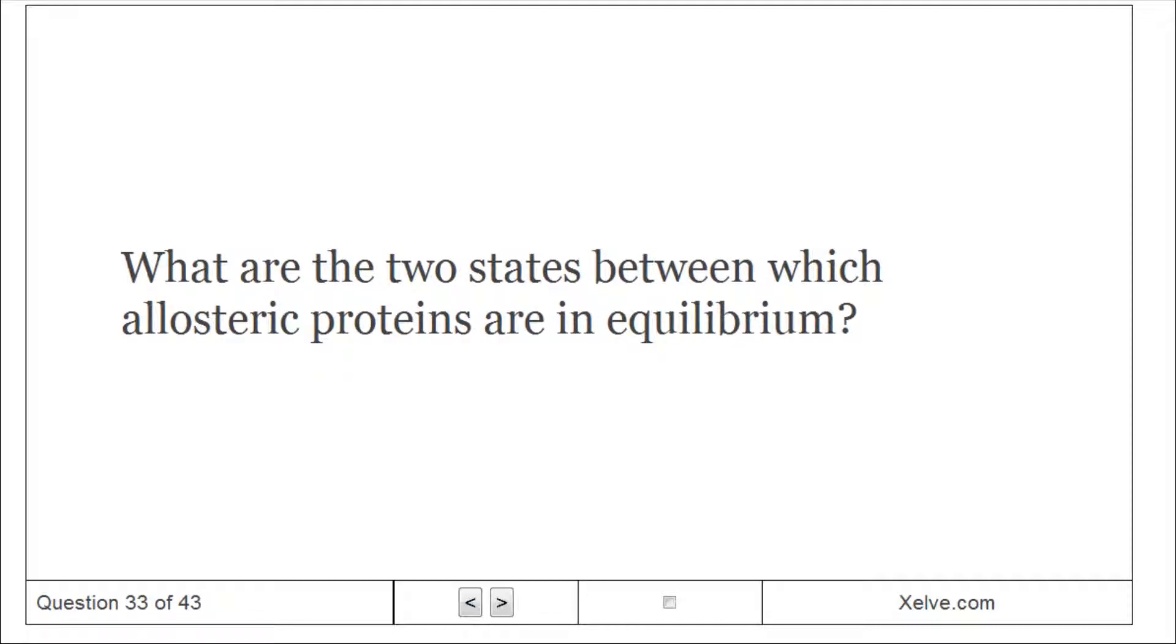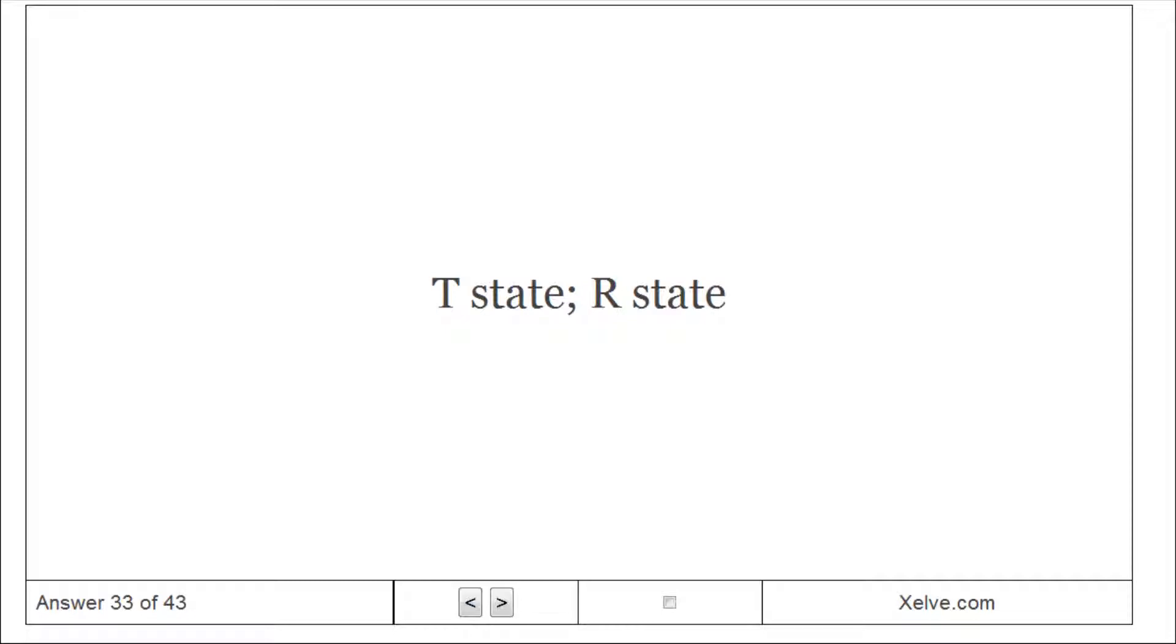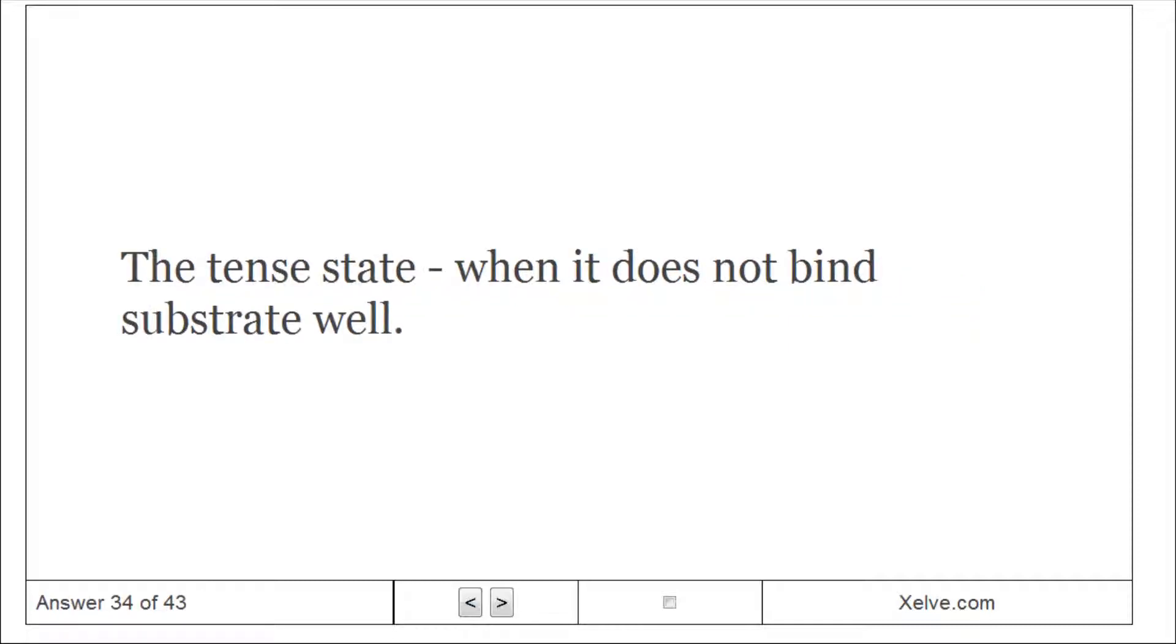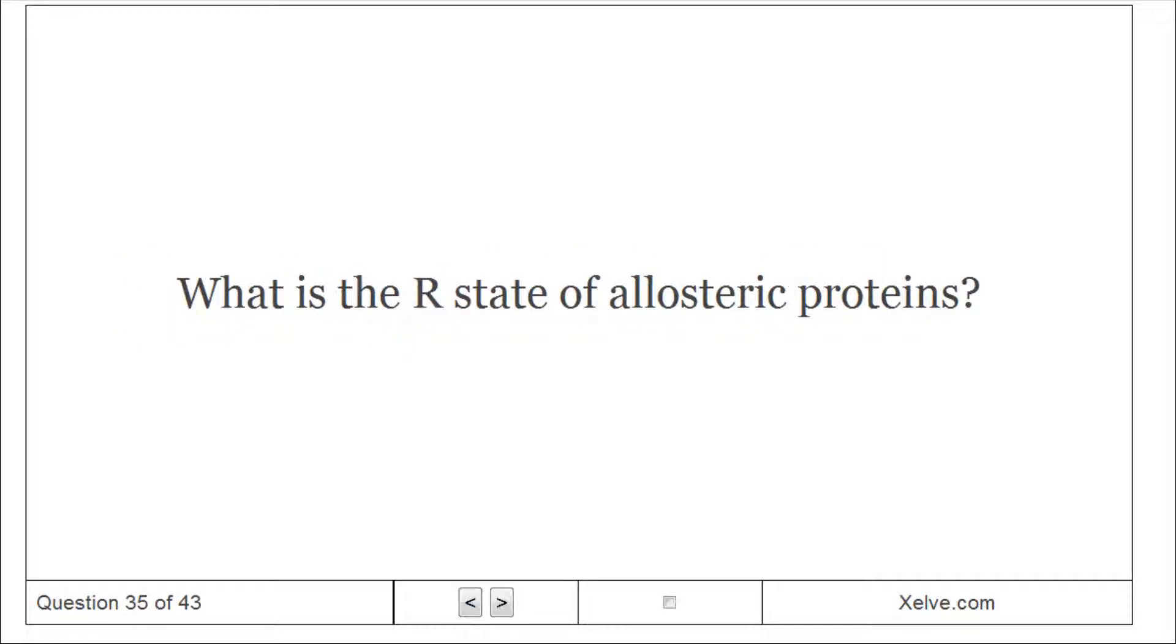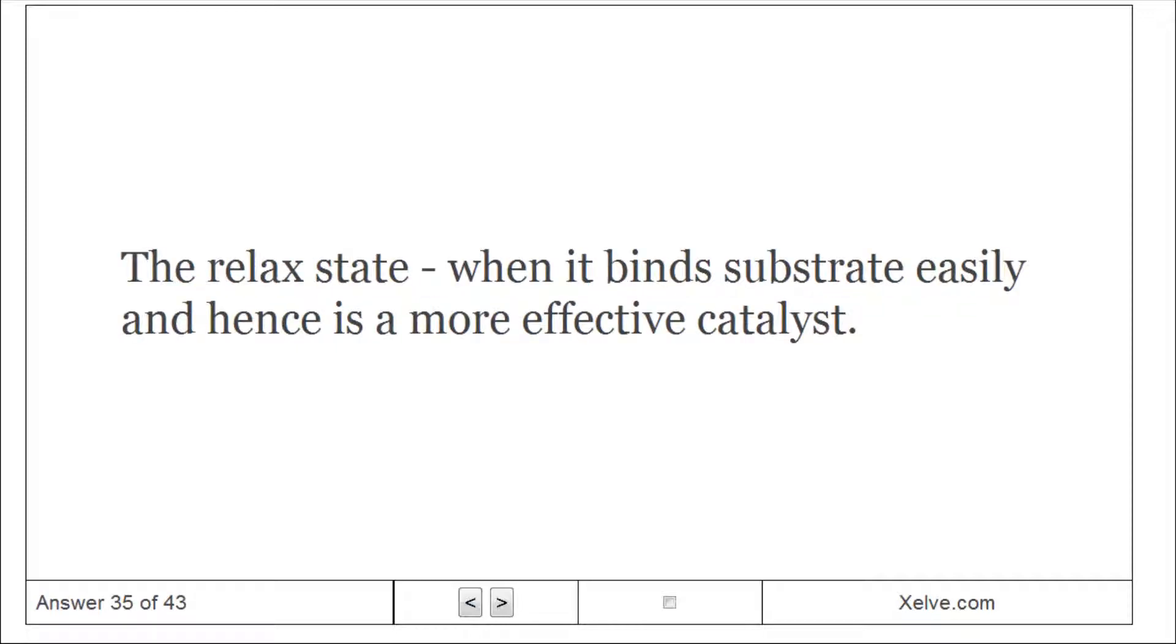What are the two states between which allosteric proteins are in equilibrium? T-state and R-state. What is the T-state of allosteric proteins? The tense state when it does not bind substrate well. What is the R-state of allosteric proteins? The relaxed state when it binds substrate easily, enhancing a more effective catalyst.